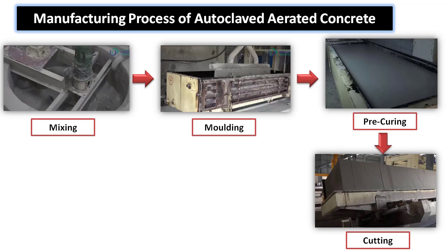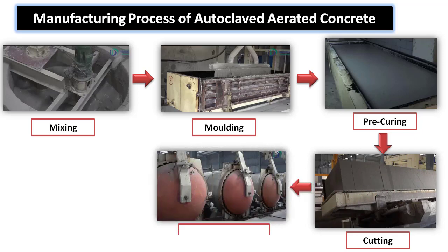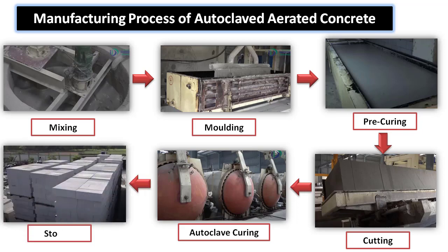After the cutting process, the cut blocks are placed in the Autoclave for 12 hours, where steam curing is used to complete the hydration of concrete. The blocks and panels are then removed from the Autoclave and placed for cooling. After cooling, some samples are sent for quality testing and the remaining blocks are stored according to their shape and size. This completes the manufacturing process of Autoclaved Aerated Concrete.